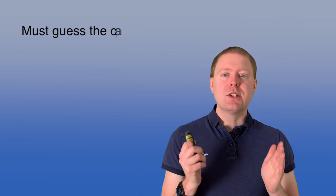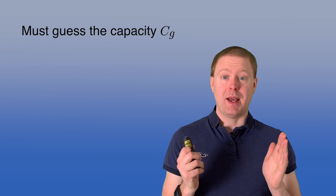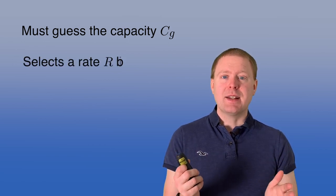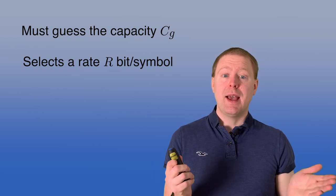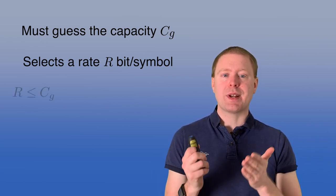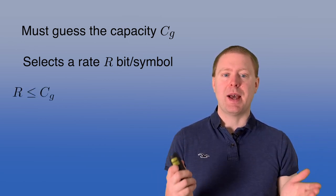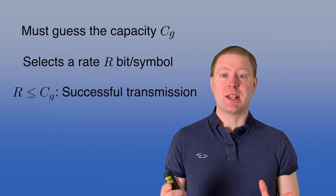And since the transmitter doesn't know the realization, we assume the receiver knows it, then it needs to guess on what the capacity is going to be. And it selects a rate r, an information rate in bits per symbol, and if it happens to be smaller than the realization of this channel capacity, then we have a successful transmission.